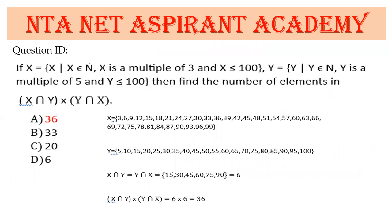Set theory question: X = {x | x ∈ N, x is a multiple of 3, x ≤ 100}, Y = {y | y ∈ N, y is a multiple of 5, y ≤ 100}. X ∩ Y contains common elements: 15, 30, 45, 60, 75, 90 — 6 elements. So |X ∩ Y| × |Y ∩ X| = 6 × 6 = 36. Right answer is option 1.